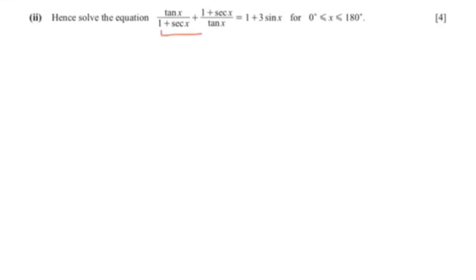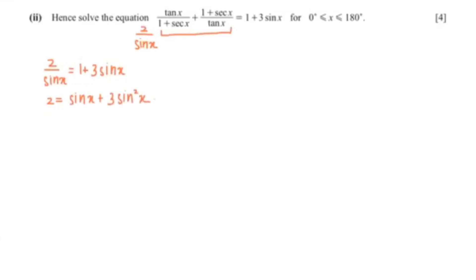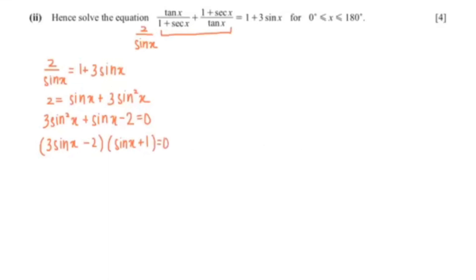Moving on to the second part of the question. We know that the left hand side equals 2 over sine x. So now I'm going to set 2 over sine x equal to 1 plus 3 sine x. Multiplying sine x to both sides gives 2 equals sine x plus 3 sine squared x. Rearranging, you can see this is a quadratic equation. Factorizing gives 3 sine x minus 2, times sine x plus 1, equals 0.